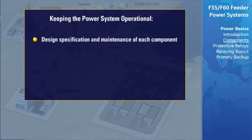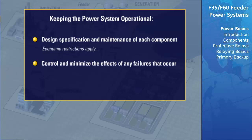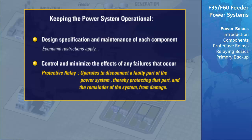This is accomplished in two ways. The first is by the specification of the design and maintenance of each component to prevent failures. The second procedure is to control and minimize the effects of any failures that do occur — this is where the protective relay fits in. The protective relay is the device which operates to disconnect a faulty part of the power system, thereby protecting that part and the remainder of the system from damage.